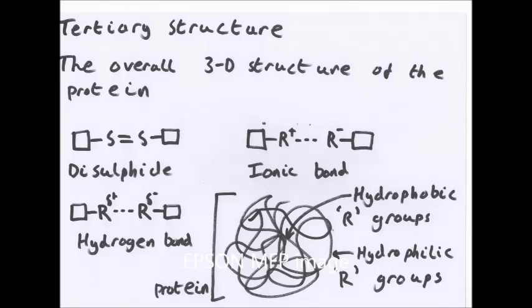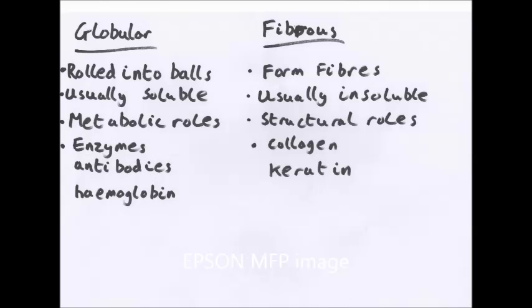The tertiary structure is the overall 3D structure of the protein. There are four types of bonding which occur with the R groups, which affect the shape of the protein. Disulfide bonds or bridges occur between amine groups that have sulfur in, in particular cysteine. This is a double bond between two sulfurs. You have hydrogen bonds between delta plus and delta minus R groups. Ionic bonds between completely ionic R groups, positive and negative. And hydrophobic groups go into the middle of the protein to get away from water. Hydrophilic will be on the outside. That's how tertiary structure works.